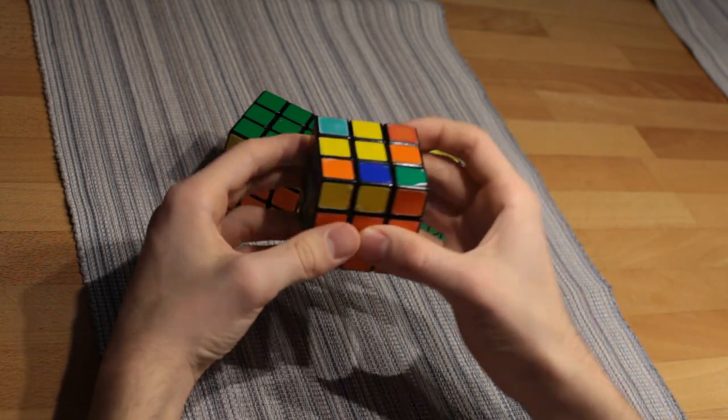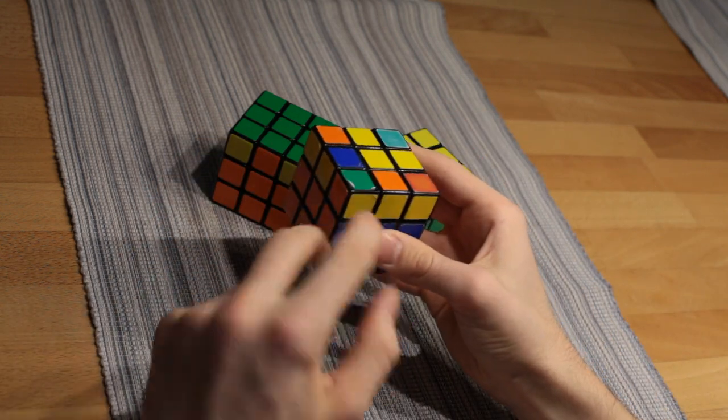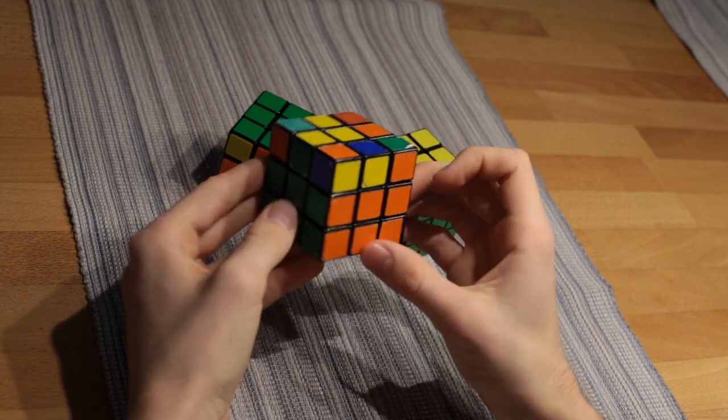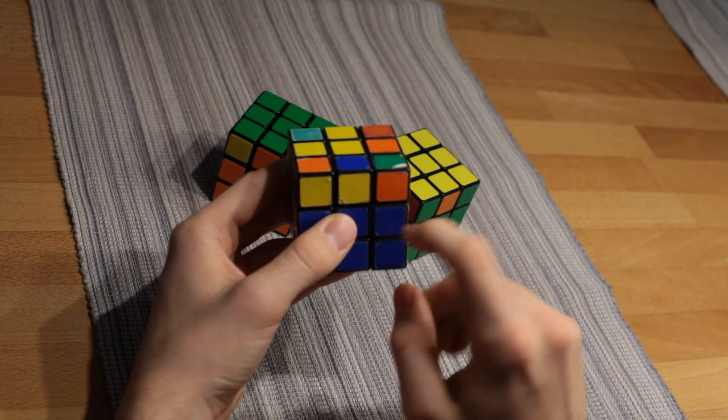The phenomenon that there are sometimes only two swapped edge pieces on the 3x3 is easily explained by just rotating the face.